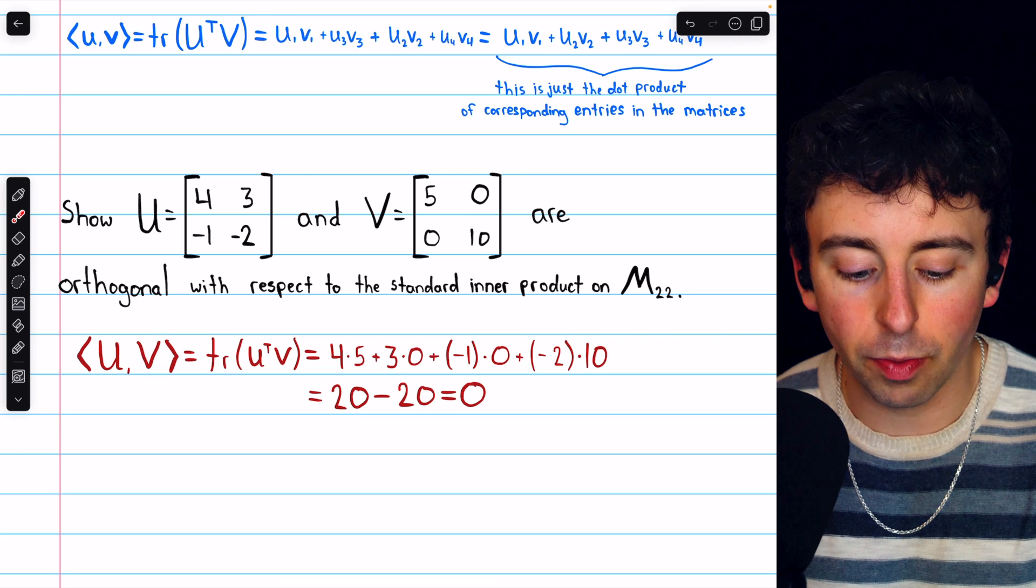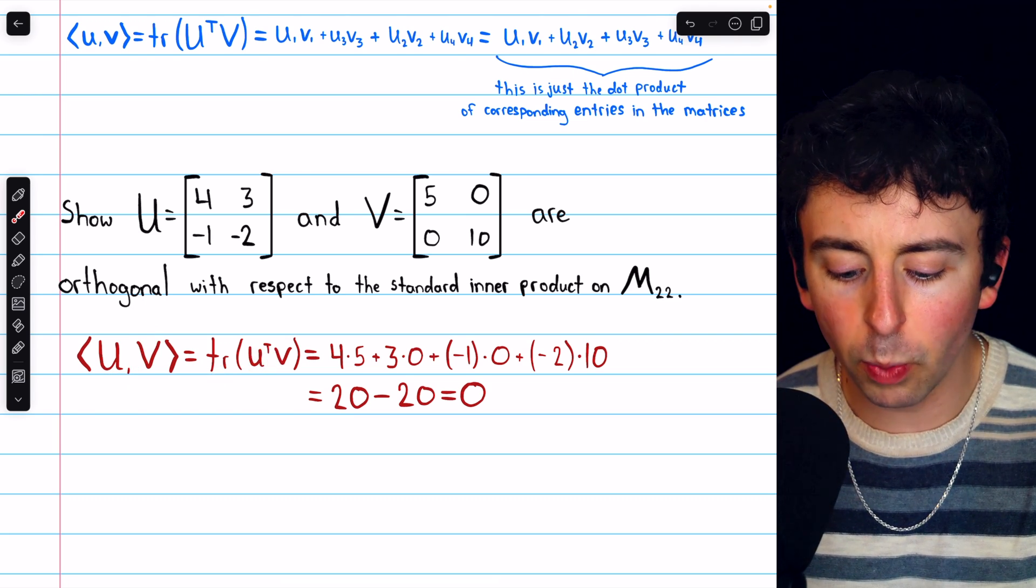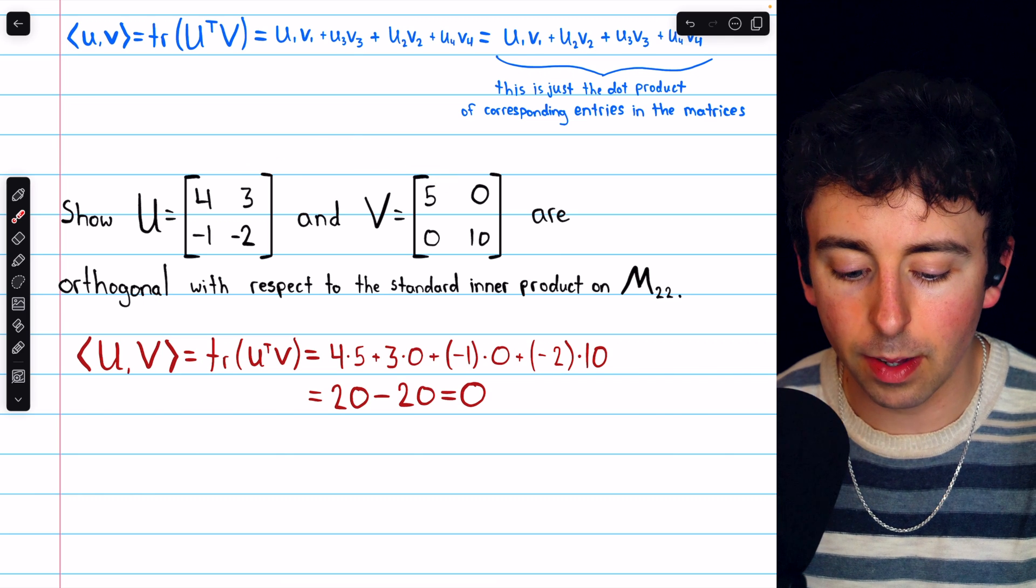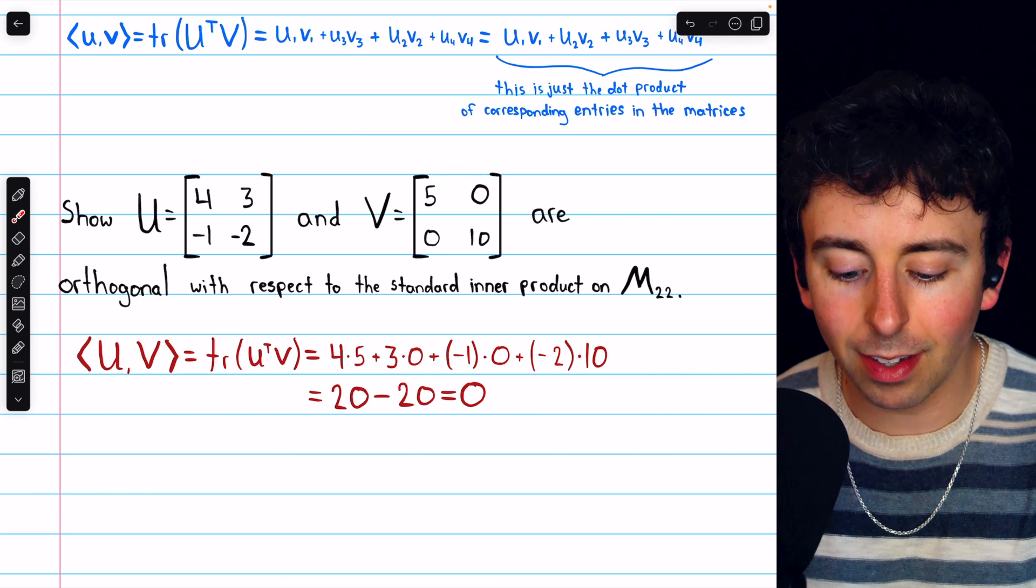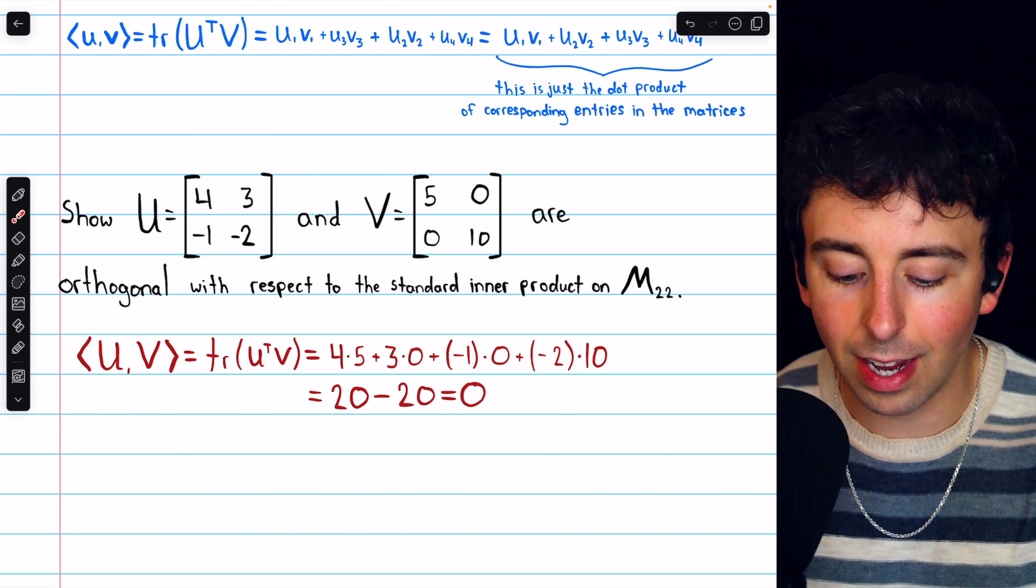The inner product of U with V is defined as the trace of U transpose times V, but we know that's just 4 times 5 plus 3 times 0 plus negative 1 times 0 plus negative 2 times 10.